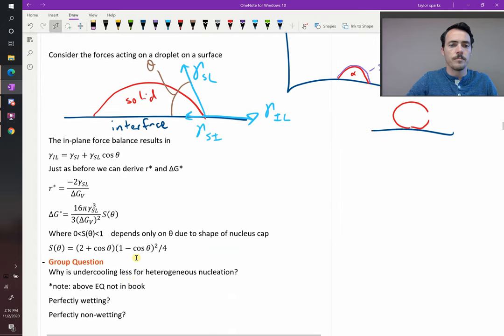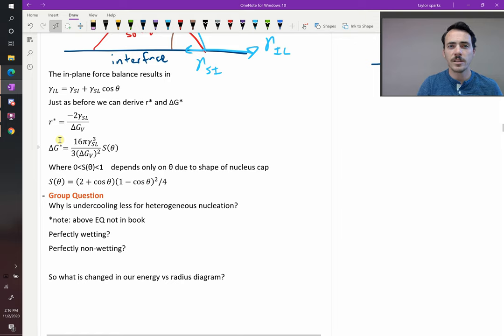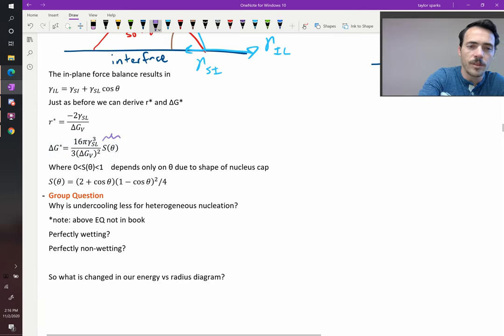What we need to do is modify our delta G star expression. Actually, it's kind of surprising. The r star expression does not change when you take into account heterogeneous nucleation. Instead, delta G star changes. And it looks the exact same as before, except it has this extra term right there. S is a function of theta. And S is a function of theta mathematically. If you know the contact angle, you could plug these things in. But really what it is, it's a number between 0 and 1.